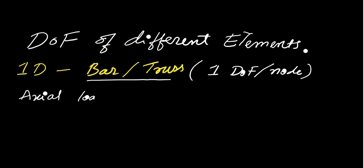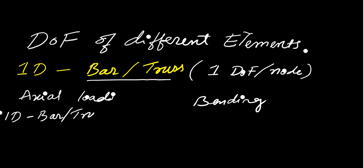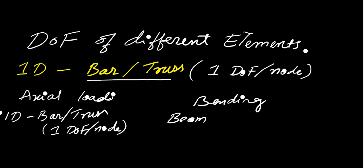If it is an axial load, for a 1D bar element — for a bar or truss — you will have 1 degree of freedom per node. And in the case of bending, which is nothing but a beam, the beam is also a 1D bar element but there will be 2 degrees of freedom per node.